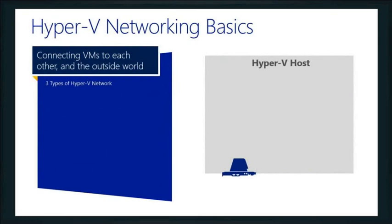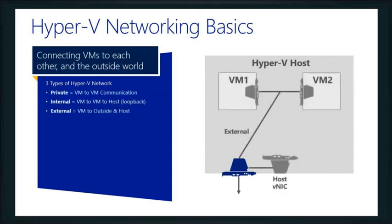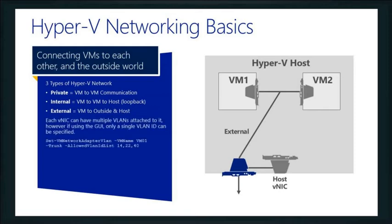Let's switch gears and talk about some of the Hyper-V networking basics. There are three main types of networks inside our Hyper-V-based switches: private, which allows only VM-to-VM communication; internal, which allows VM-to-VM and to host — basically a host loopback; and external, which allows a virtual machine to access the outside world. You can even assign VLANs to these, although in the GUI you can only assign a single VLAN ID. Using PowerShell, as shown on the slide, you can assign multiple VLANs to those VNICs.